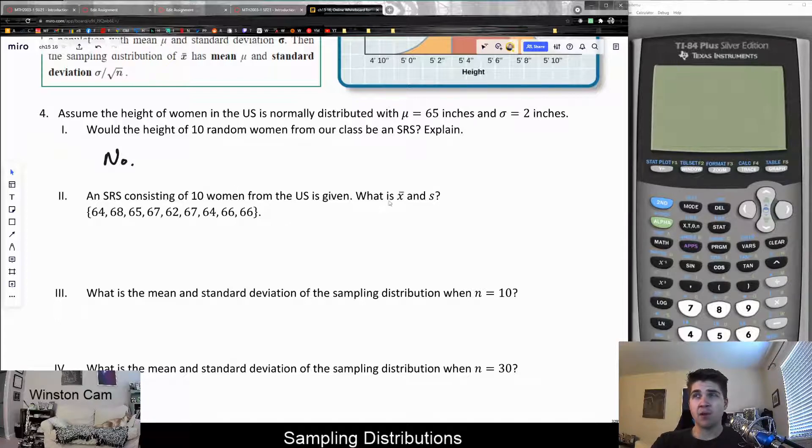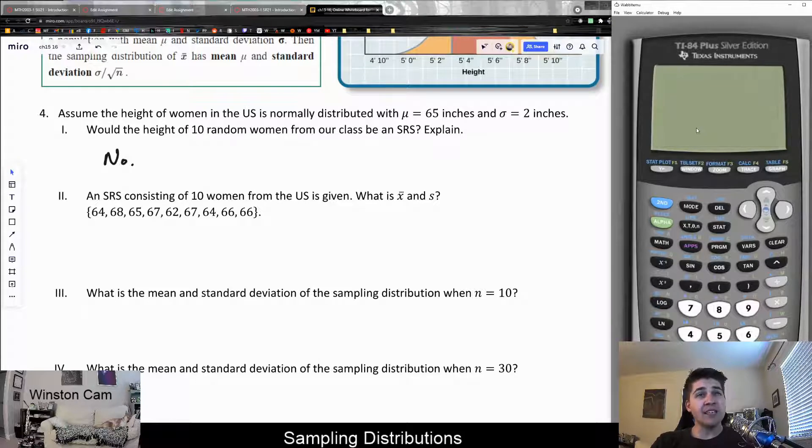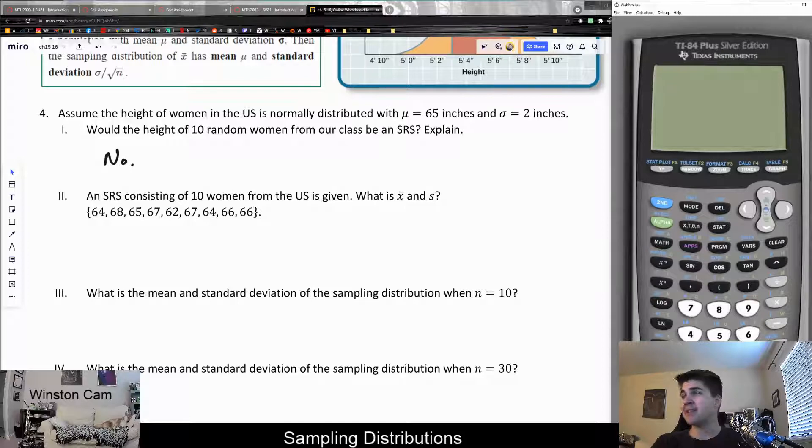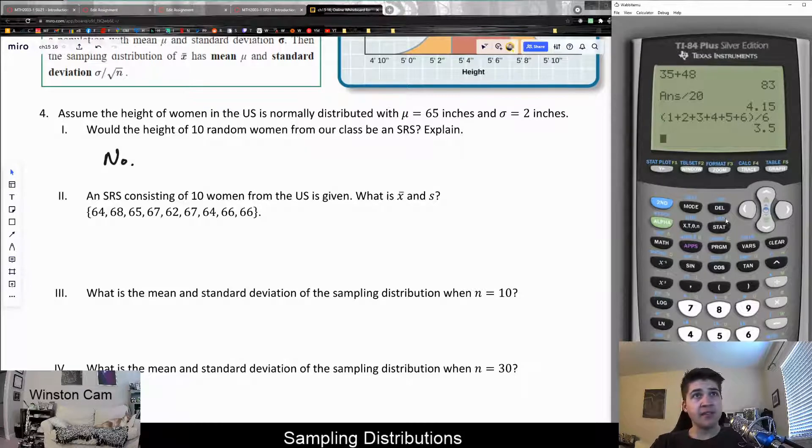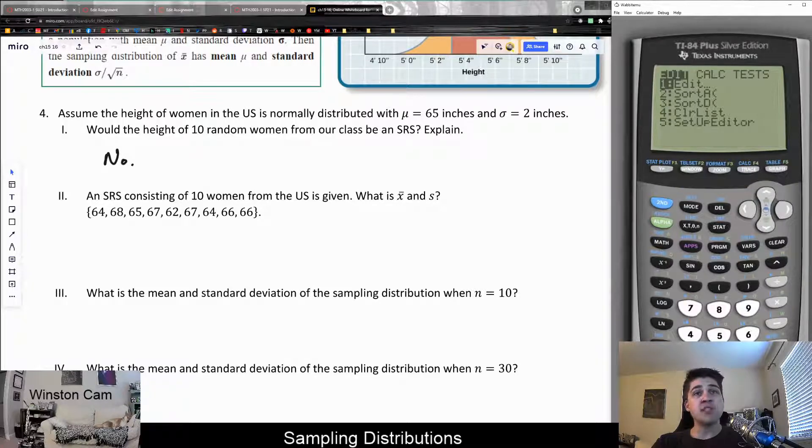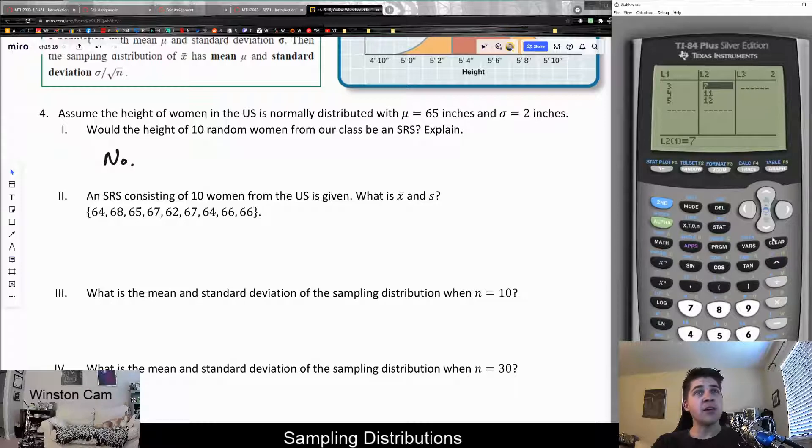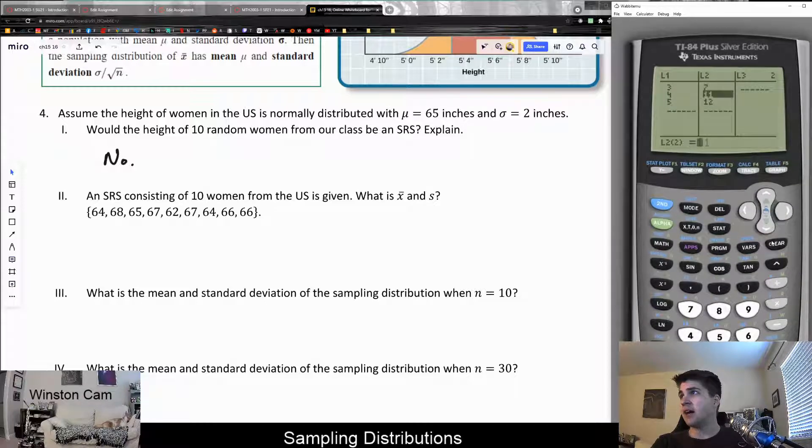Let's say we were given a simple random sample of 10 women in the United States. We could say, what is X bar and what is S? Remember, this means the X bar is the mean and S is the standard deviation. Let me go ahead and teach you how to do this in a calculator since I don't believe we've discussed this yet in this particular course. If you already know how, you can skip over this. But basically, one way of doing it is by using the list feature of your calculator. It's basically like a table where you can store information.